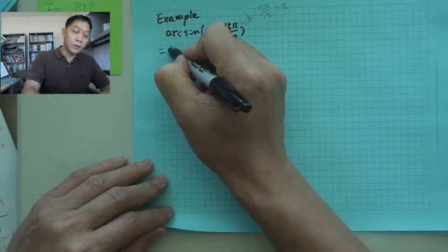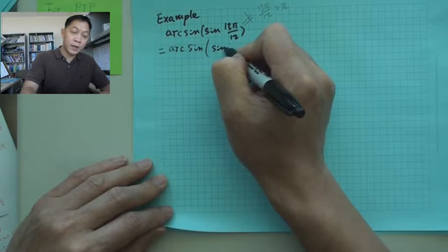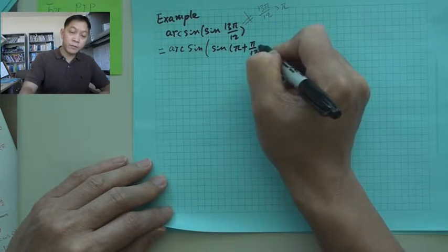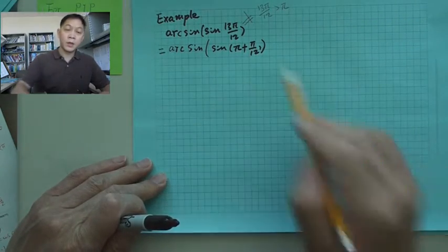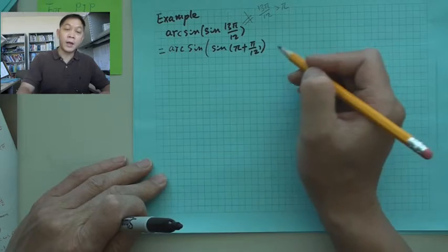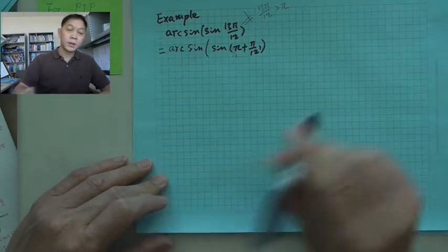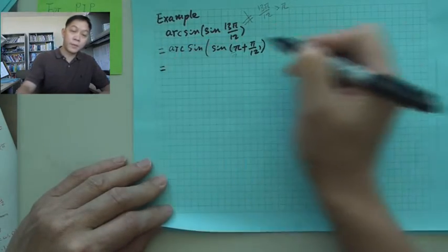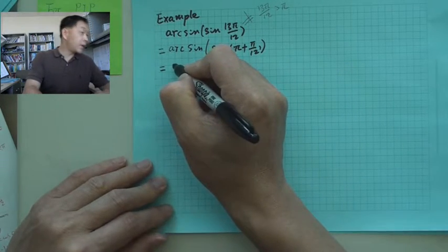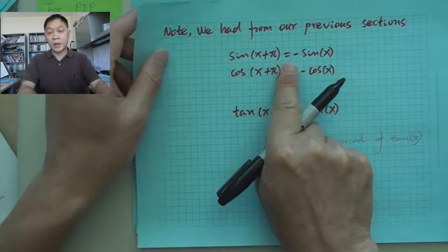So what you want to do is this. You want to have arcsine, inside you want to write sine pi plus pi over 12, because 13 pi over 12 is pi plus pi over 12, because here is 12 over 12.